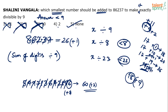So the answer to the original question is option 5 — 1 has to be added. The method is: sum of the digits. And remember, in general, when looking for divisibility by a particular number x, the number you add must be less than x. It cannot be equal to or more than x.